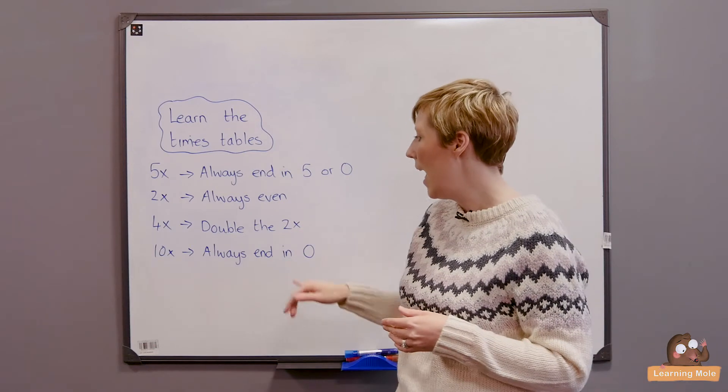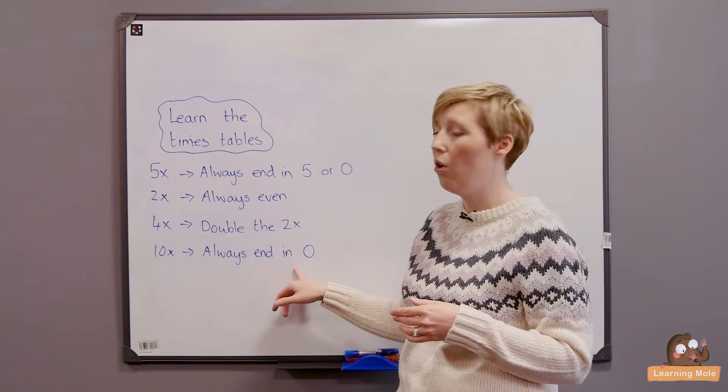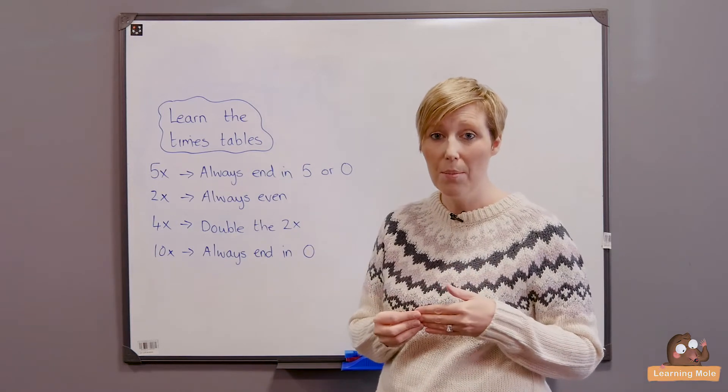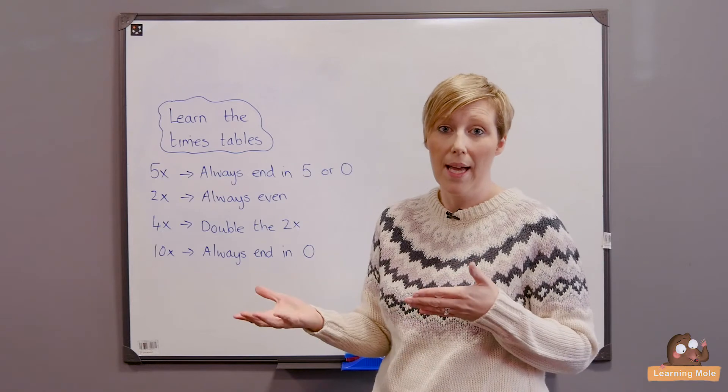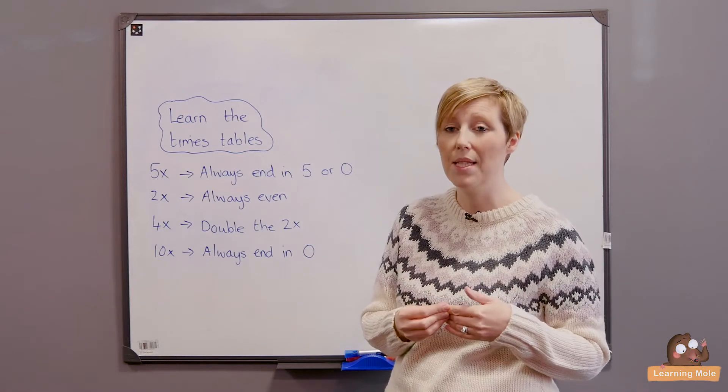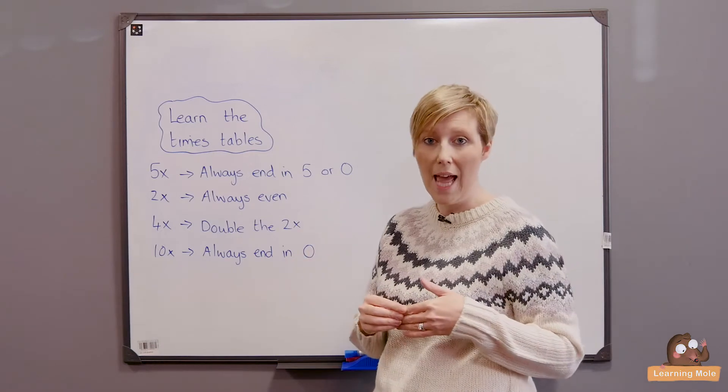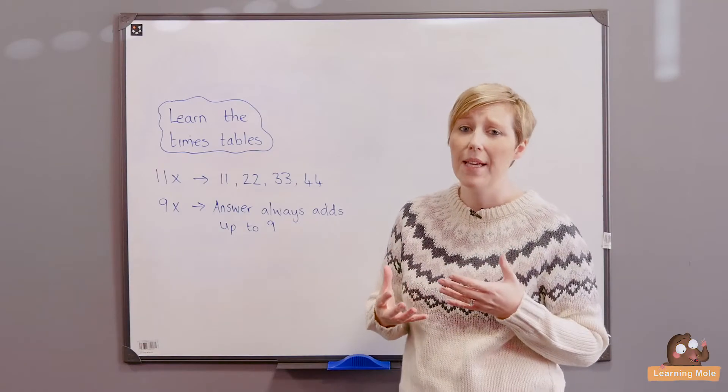The ten times tables always end in a zero, and the tens digit is always the multiple of what you're multiplying. So if it's eight times ten, it's going to be an eight at the beginning with a zero at the end. Times tables really give you a good opportunity to talk about patterns and number sequences with your child.